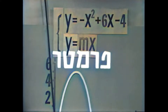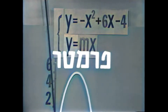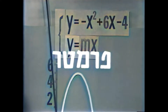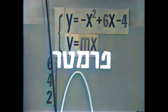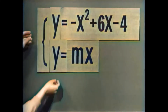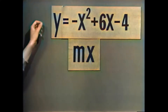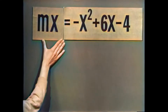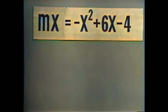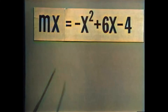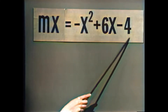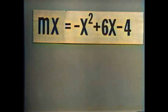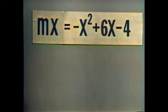עכשיו, מה יהיה הפתרון של מערכת המשוואות הזאת? נעשה כמו שעשינו אז — נציב במקום y את Mx. נחסר משני האגפים ונקבל: x בריבוע פלוס Mx מינוס 6x פלוס 4 שווה 0.